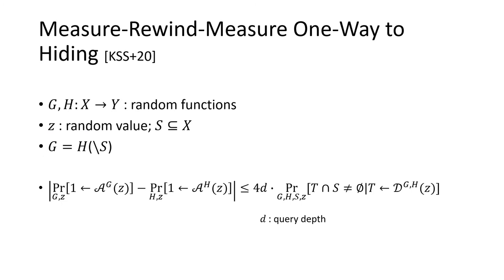Before we prove the ciphertext indistinguishability, we first recall the measure-rewind-measure one-way-to-hiding lemma. Let g and h be two random functions with domain X, z a random value, and S a subset of X. g and h are equal except for the points in this set S.